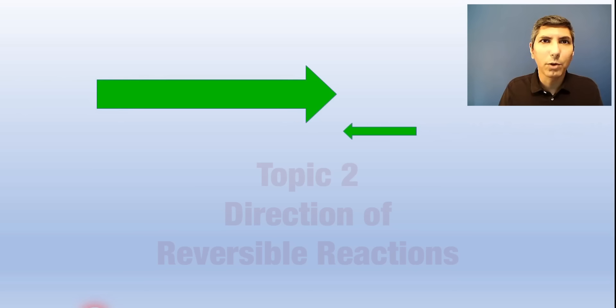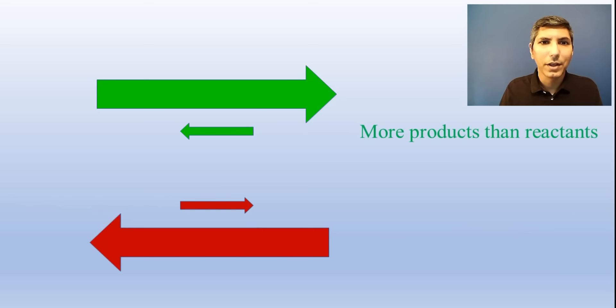The direction in which equilibrium will lie has to do with relative rates of the forward and reverse reactions. If the forward reaction is faster than the reverse reaction, you'll end up with more products than reactants. On the other hand, if the reverse reaction is faster, you'll end up with more reactants and relatively little conversion to products.